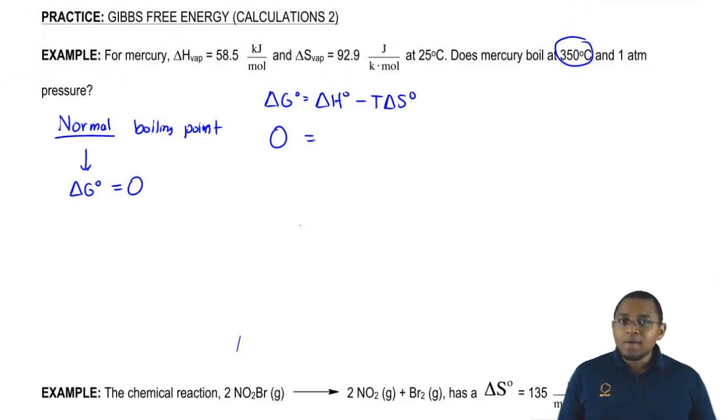We can plug in the delta H value as well as the delta S value. So this will be 58.5 kilojoules over moles minus T, we don't know temperature, we're looking for it, times, remember entropy of vaporization has to be in kilojoules just like delta H is in kilojoules.